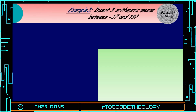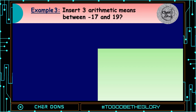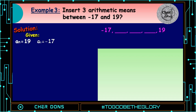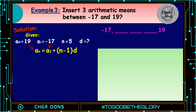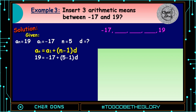Example number 3: Insert three arithmetic means between negative 17 and 19. Given: negative 17, blank, blank, blank, blank, and 19. a sub n is equal to 19, a sub 1 is negative 17, n is 5, d is unknown. Applying the formula: a sub n equals a sub 1 plus quantity n minus 1 multiplied by d. Where 19 goes to a sub n, negative 17 goes to a sub 1, and 5 goes to n. We have: 19 is equal to negative 17 plus quantity 5 minus 1 multiplied by d.